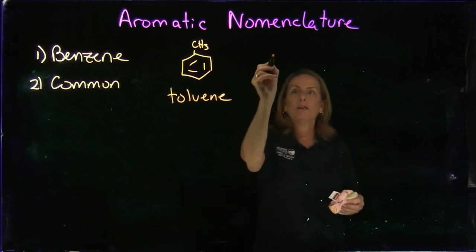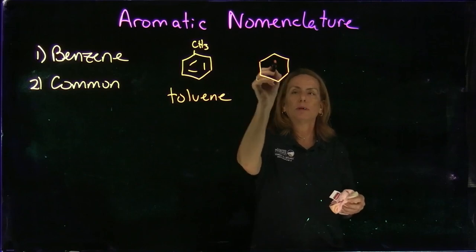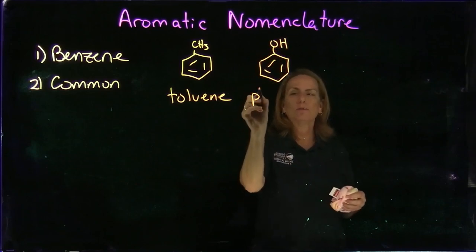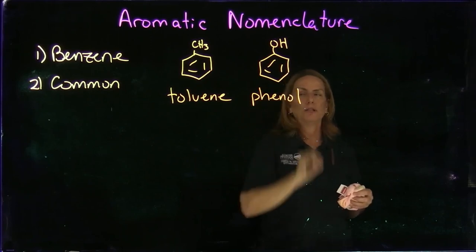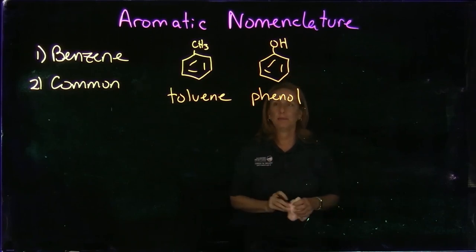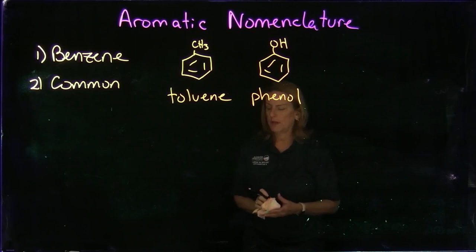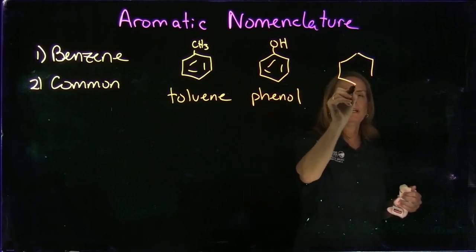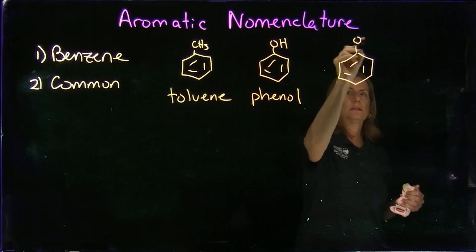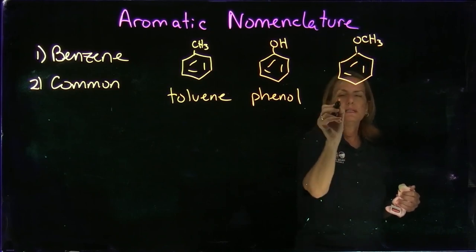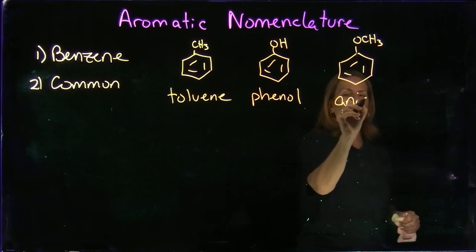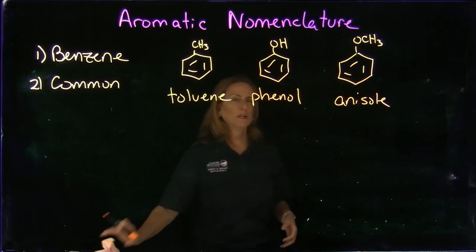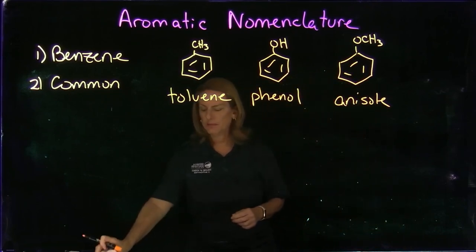Toluene is the parent chain — it's never called methylbenzene. If we put a hydroxyl group, an OH, this is an alcohol and it's called phenol; it's automatically given that name because of the OH group. If we have a methoxy group, making an ether, this is given the name anisole.